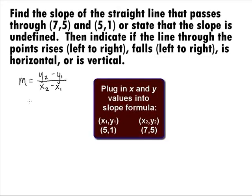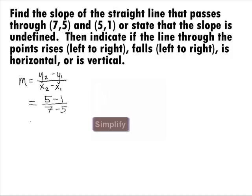Let's go ahead and call (5, 1) point 1 and (7, 5) point 2. Plugging in our values into this formula, we get 5 minus 1 on top over 7 minus 5 in the denominator. This will simplify to be 4 in the numerator over 2 in the denominator, which is equal to 2.